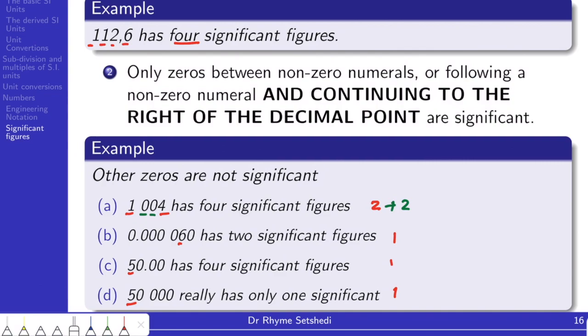And lastly, we look at zeros that are following a non-zero numeral and are continuing to the right of the decimal point. So there must be a decimal point. We look at number A and there's none in there. We look at number B. There's only one zero that's following a non-zero and is on the right of the decimal point. In C, there's three of those zeros. And there's none in D.